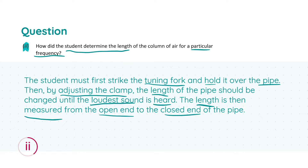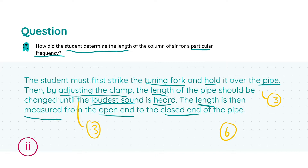There are six marks going for this question. You only need to include any two of these four steps to get full marks: holding the tuning fork over the mouth of the pipe, adjusting the length of the pipe, listening until the loudest sound is heard, or measuring the length from the closed end to the open end. Any two of these four will earn you three marks each, giving six marks total.